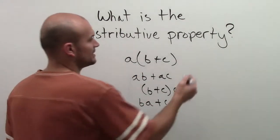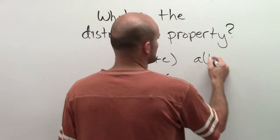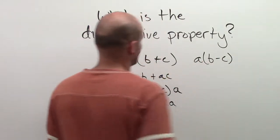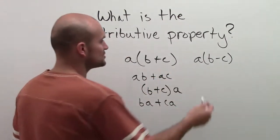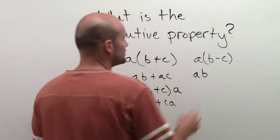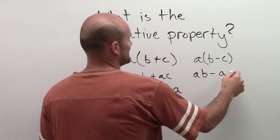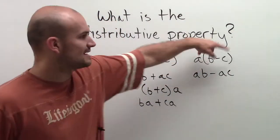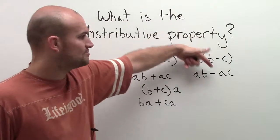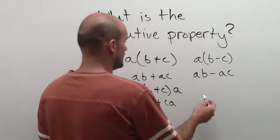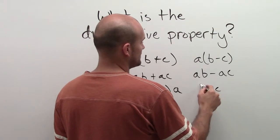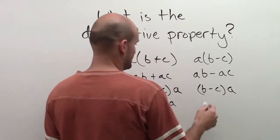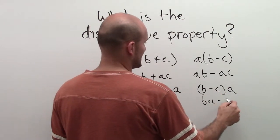The other way that we can write it is the distributive property also works if you're subtracting b and c. So it doesn't matter if you're adding or subtracting. You're still going to get it, except now you're going to do a times b minus a times c, because a times a negative c is going to be a negative number. And it also works the same thing if you had b minus c times a. You'd still get ba minus ca.